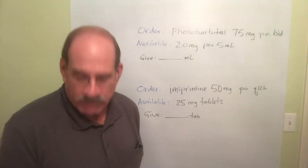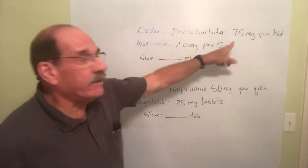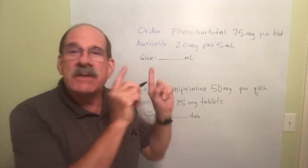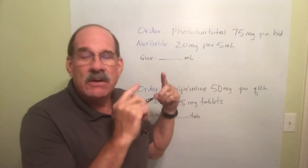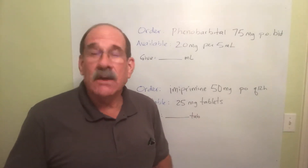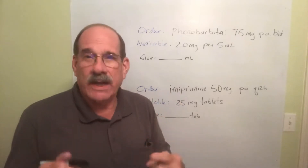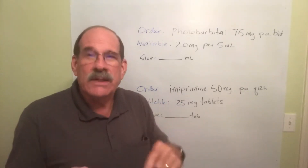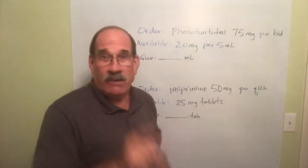I'm back. Okay, let's see what we got here. Phenobarbital — the order is 75 milligrams. You should have done these exactly like I'm doing them here. If you didn't, you're putting yourself in danger. Because if you do them just the way I say, you're going to get the right answer. If you don't get the right answer, it's because you didn't do it exactly like I said, and that's going to be your fault.